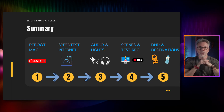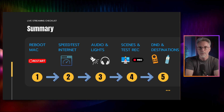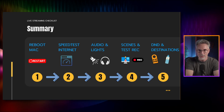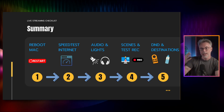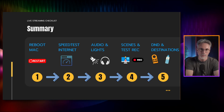Here is the summary of what I've just spoken about. Number one: reboot and restart your Mac. Number two: check your internet speed, switch off Netflix and stop people streaming. Number three: make sure your audio is working, your lights are on, and everybody can hear you — and if you've got guests, you can hear them. Make sure your scenes and run of show are flowing correctly. And number five: make sure you're streaming to the destinations you expect, switch off notifications, enable do not disturb, and make sure you have plenty of water.